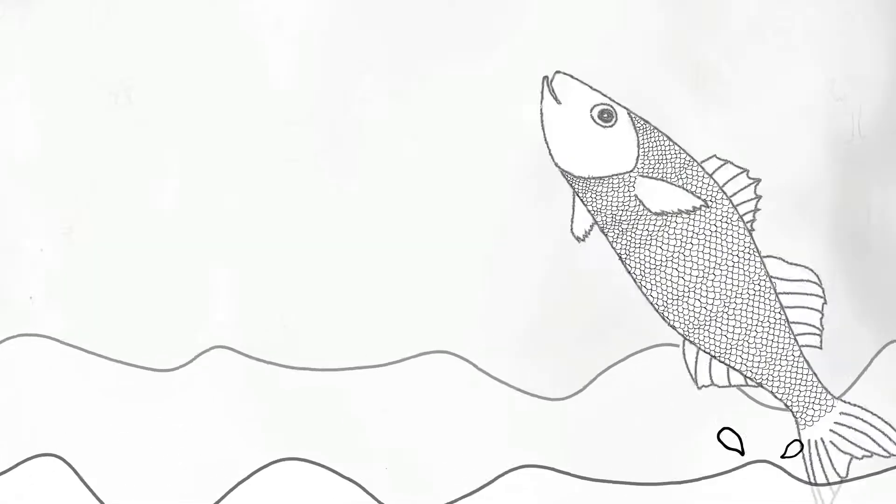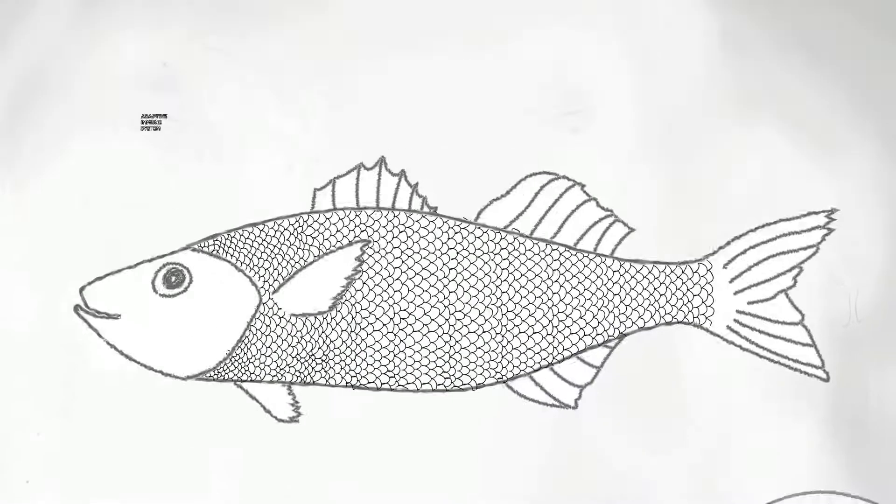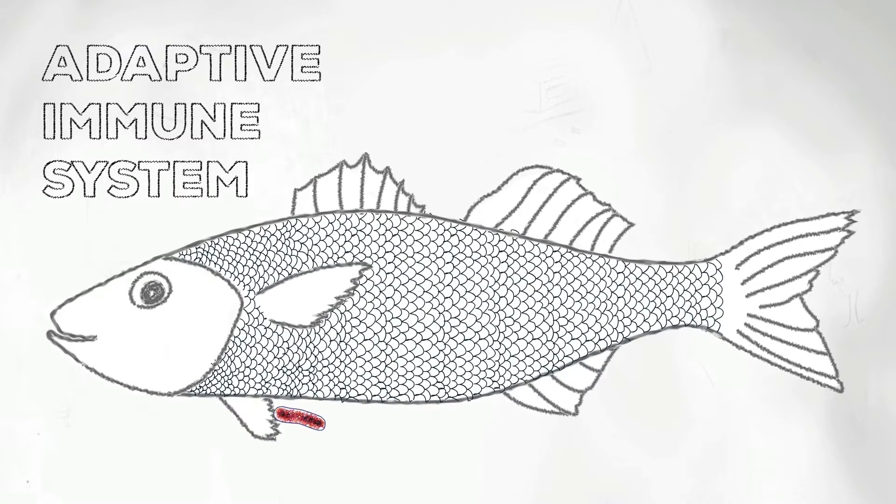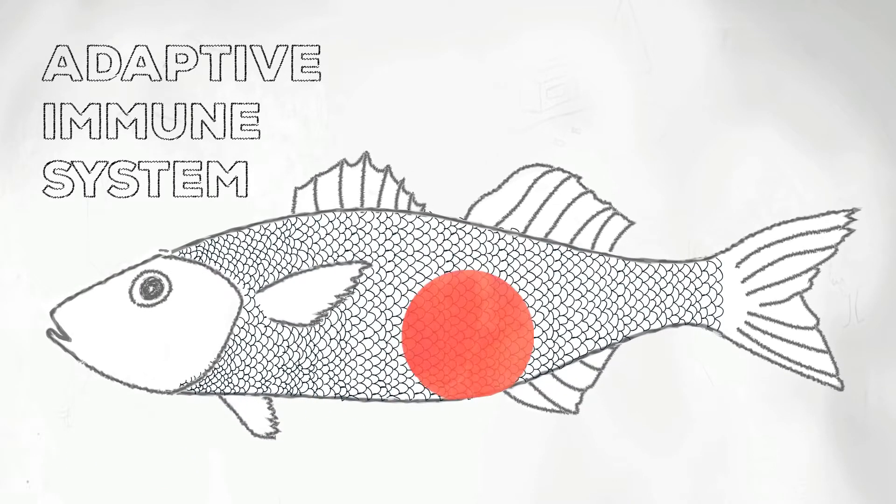On the other hand, the adaptive immune system is stimulated by exposure to an antigen and increases in magnitude and defensive capacities with each successive exposure to this particular microorganism.